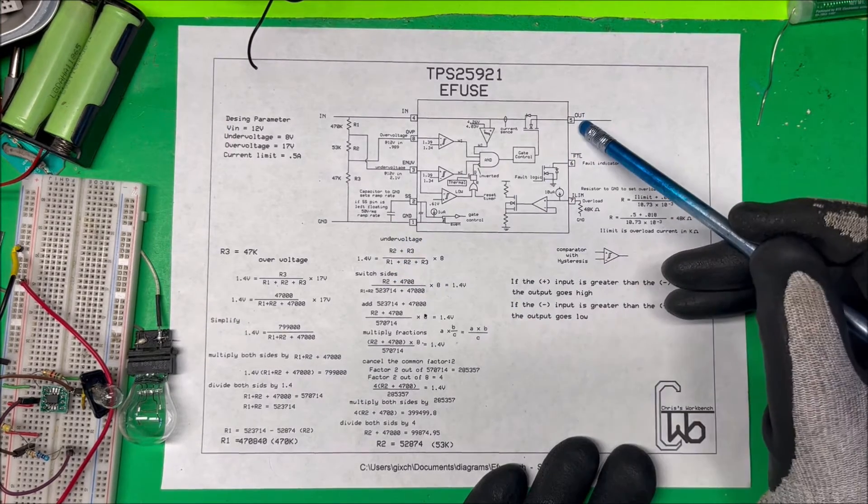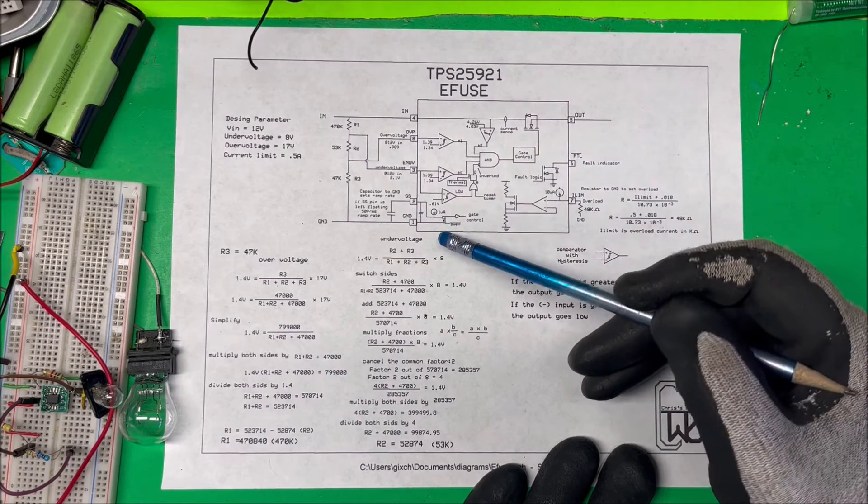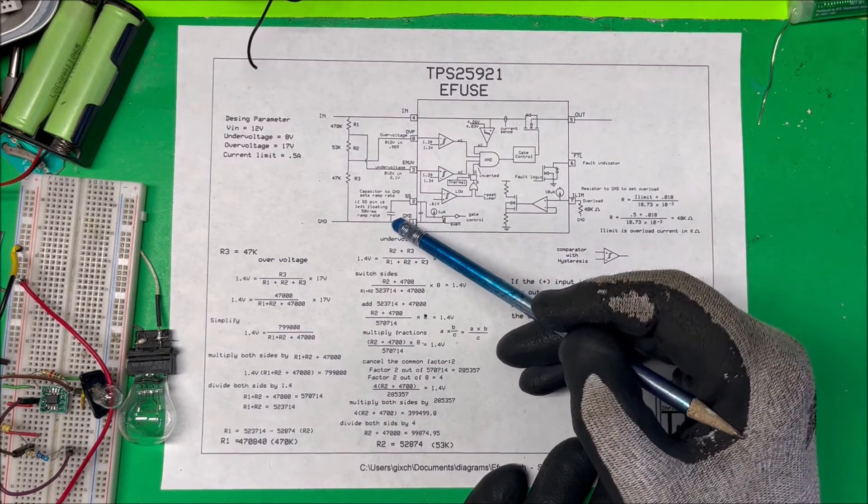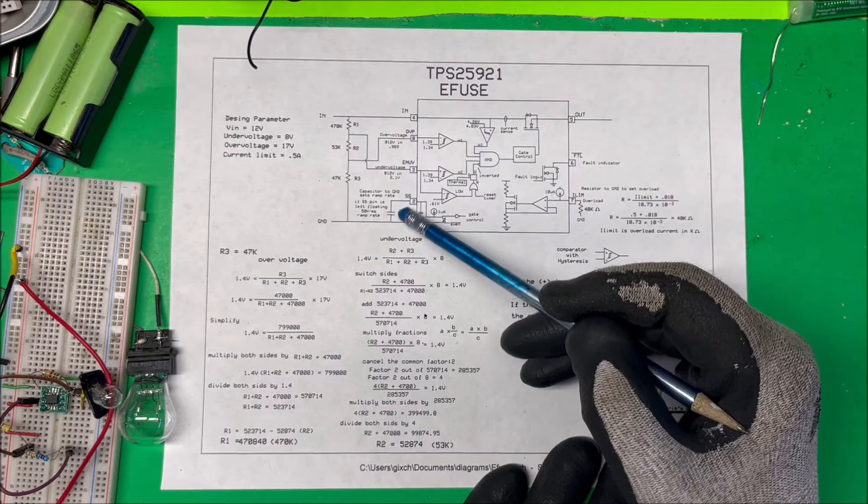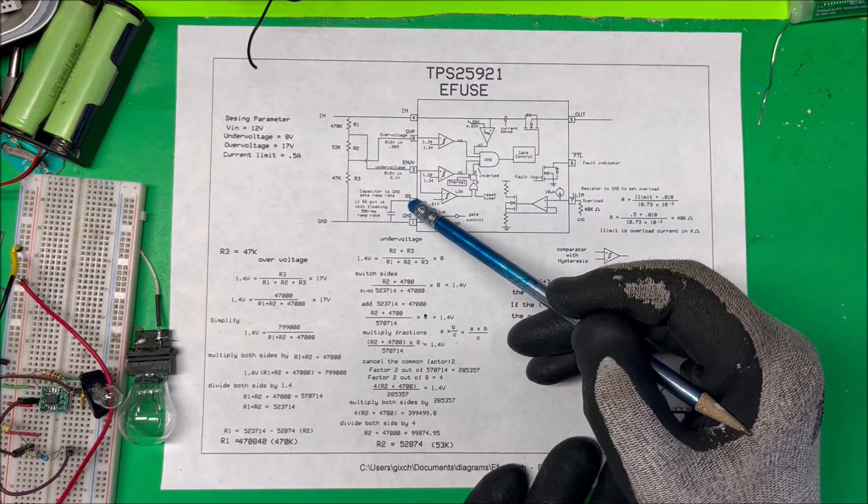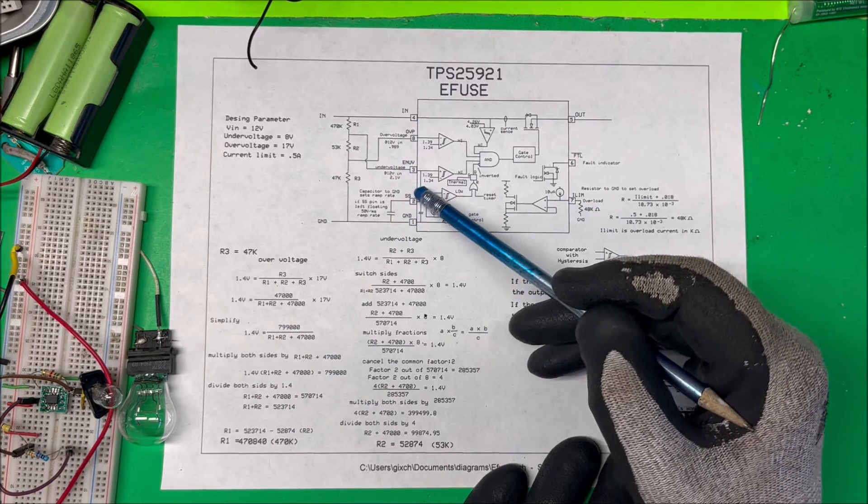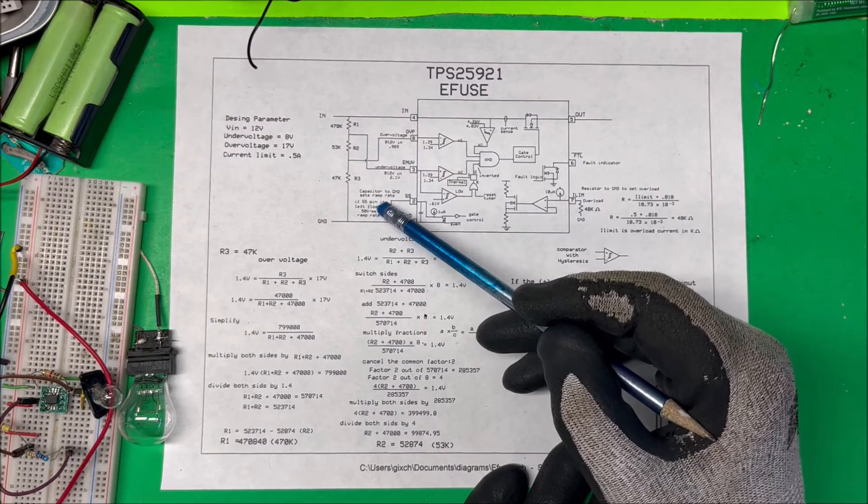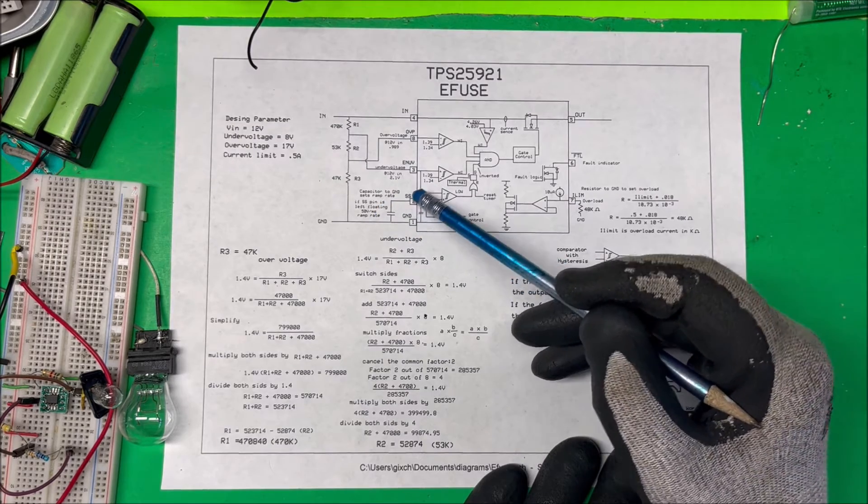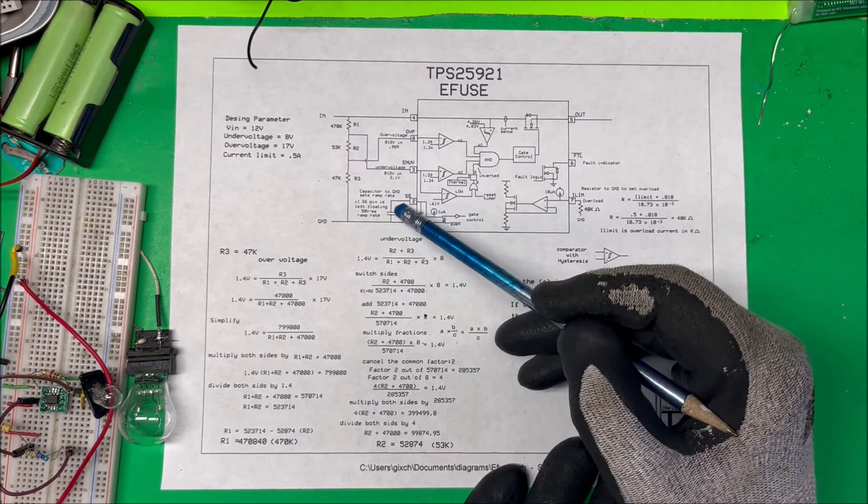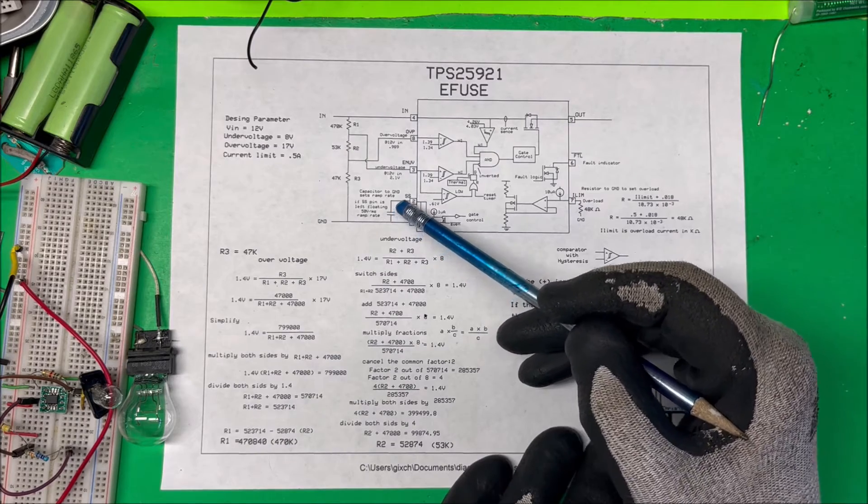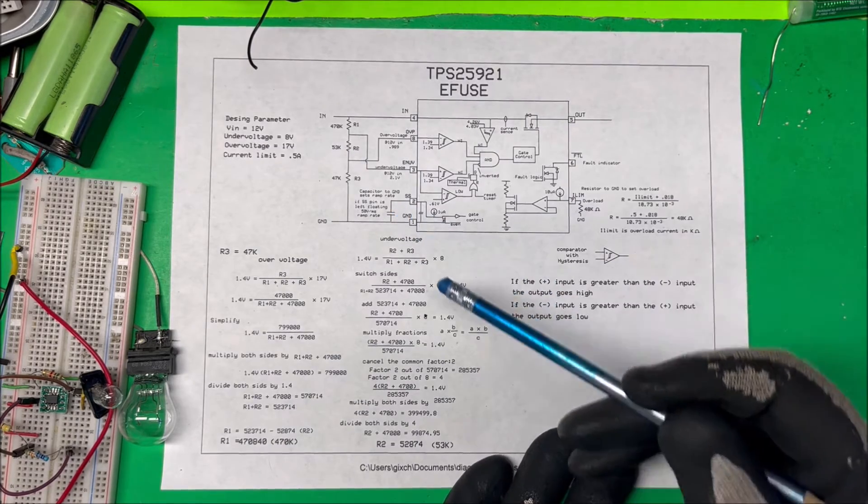We can ramp up the voltage slowly when you're putting something in there. If you leave this pin floating, it's just going to default to 50 volts per millisecond. That's pretty fast, so we're just going to leave it floating, but you can calculate the capacitor in the datasheet.